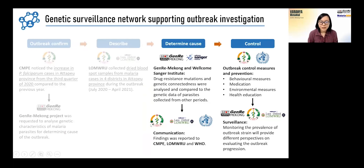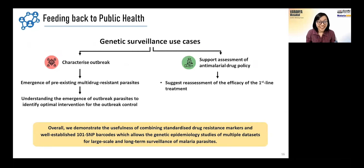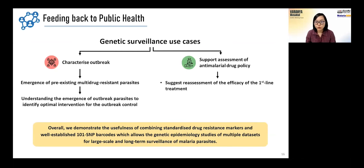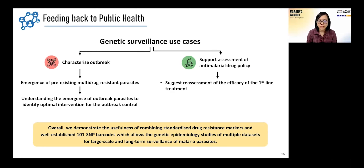Once we determined the cause, we communicated the findings to public health experts to support their decision-making with control measures. We have demonstrated another use case of genetic surveillance — outbreak characterization. In the Atapur outbreak, the outbreak was driven by pre-existing multidrug-resistant parasites. Understanding the character of the outbreak enables public health to identify optimal interventions. The benefit of an existing operational genetic surveillance system is that it enables delivery of findings to public health authorities within the same malaria season, allowing a timely response.